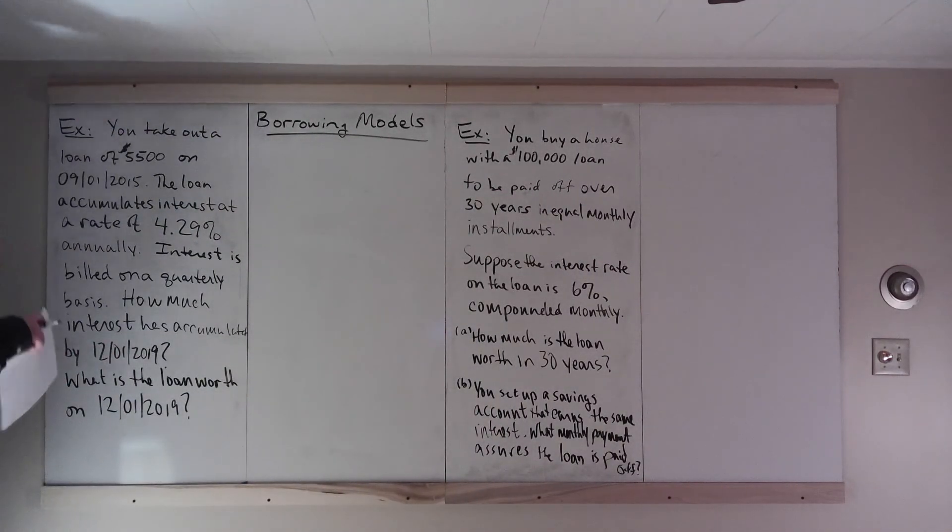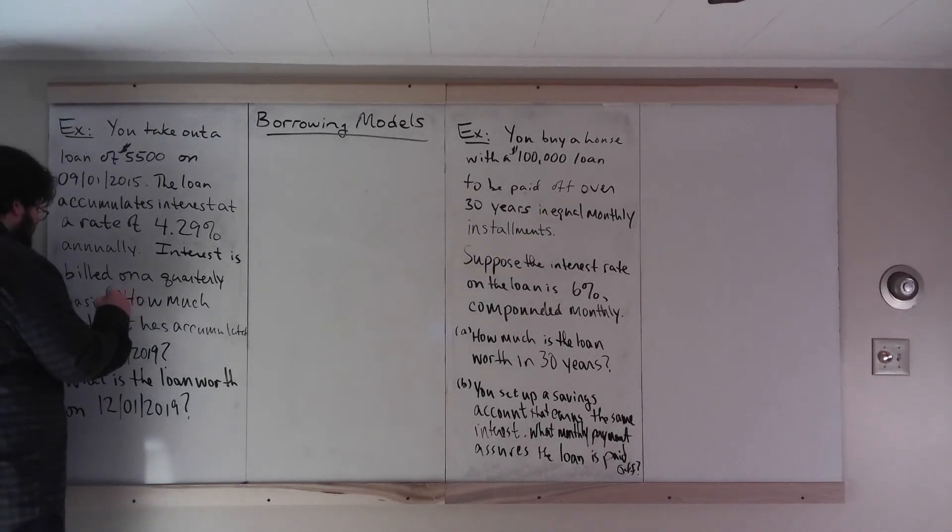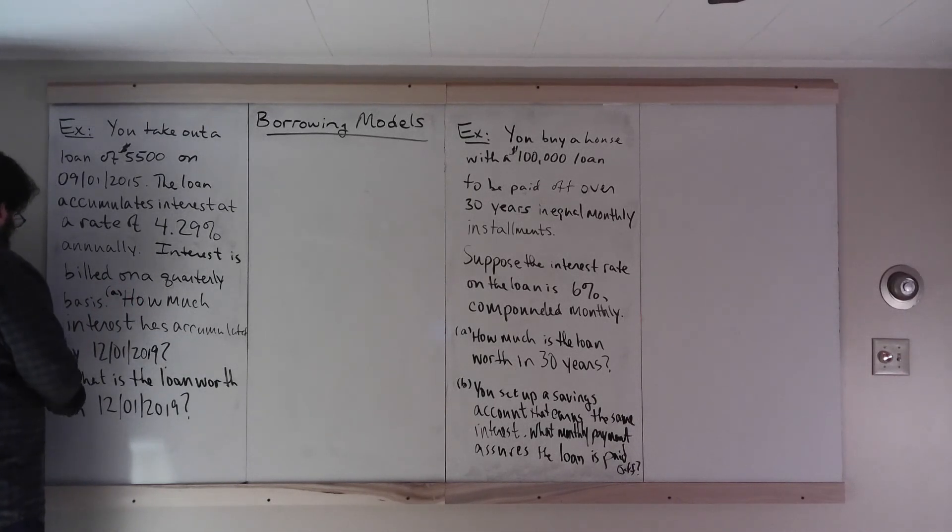Here, you take out a loan of $5,500 on September 1, 2015. The loan accumulates interest at a rate of 4.29% annually. Interest is billed on a quarterly basis. So when we're doing savings, we said interest is compounded quarterly. Here, interest is billed on a quarterly basis. How much interest has accumulated by 12-1-2019, and what is the loan worth on 12-1-2019? Maybe I should make these an A and a B.